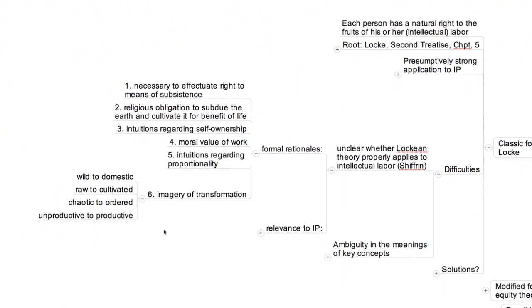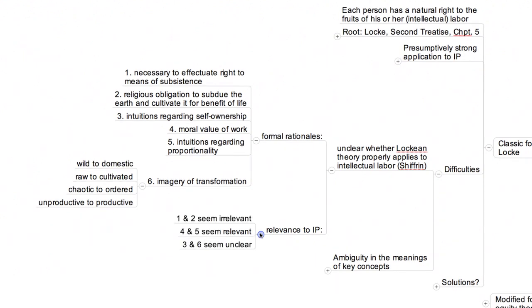Once one has catalogued the foundations of Locke's theory of real property, it becomes much less clear that his argument has force in the context of intellectual property. In particular, as Shiffrin points out, only the fourth and fifth of the six rationales seem to provide clear-cut justifications for a novelist's acquisition of a property right in her novel. Presumably, the novelist owns the work of her hands just as much as the farmer, and her labor is just as virtuous. But her survival is not dependent on controlling her novel, nor does the novel seem pertinent to her religious obligation to subdue the earth.